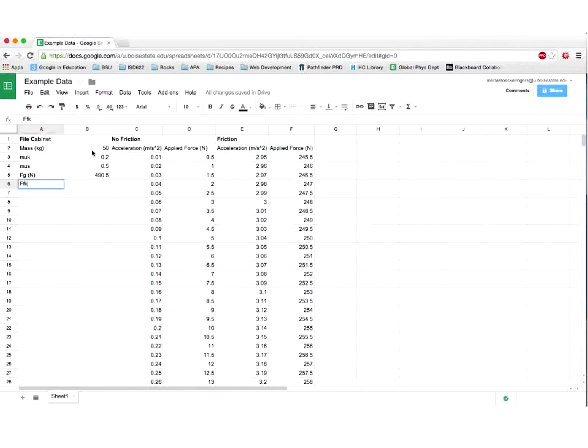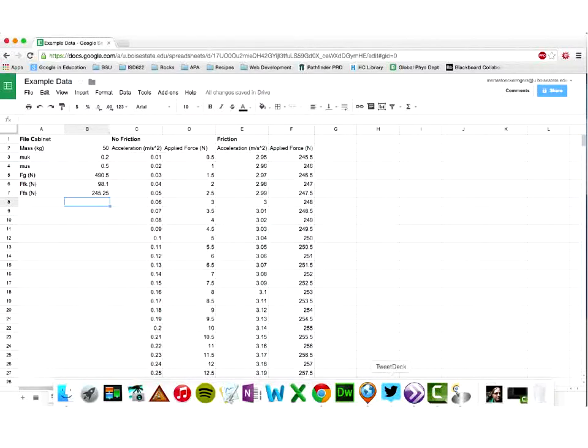Now we're also going to calculate the force of kinetic friction and the force of static friction. So the coefficients of friction should already be in there. So all you have to do is take that coefficient times the weight. I'm going to do that once for kinetic with the subscript K and then once for static. So were you able to do that in your spreadsheet? Got it.